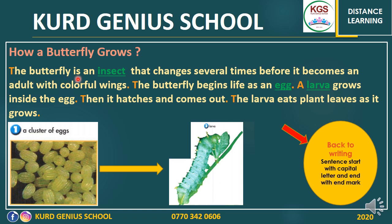The butterfly is an insect. What is an insect? Insect is one of the kinds of animals. We have six kinds of animals, which are amphibian, mammals, reptiles, bird, fish, and insects. Most insects have two wings and six legs, but not all of them.